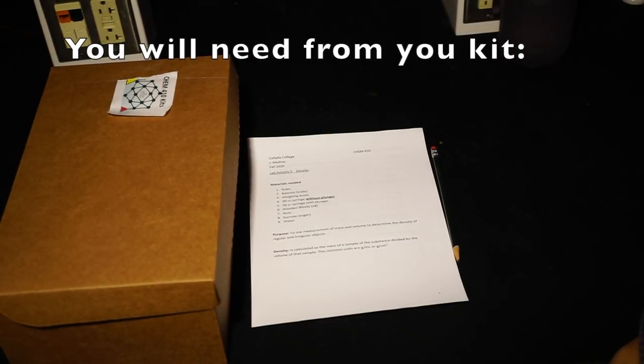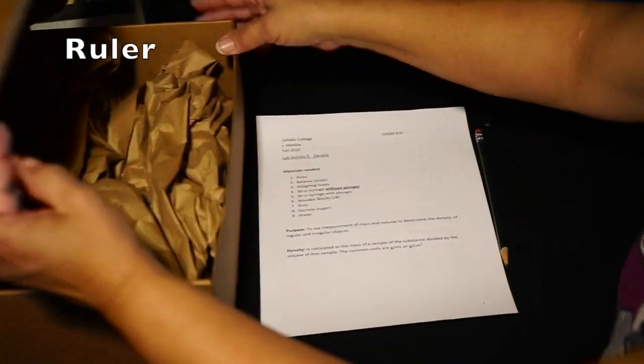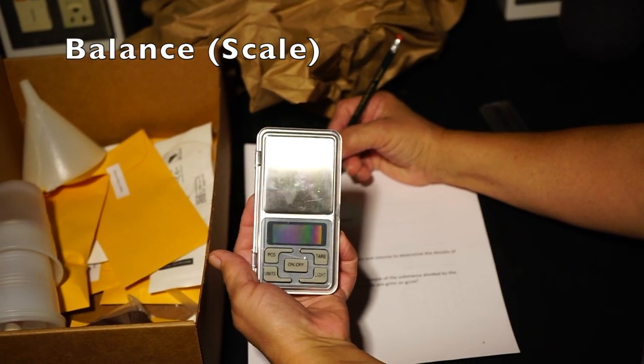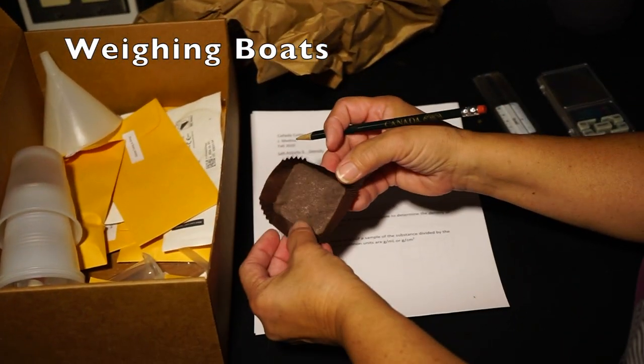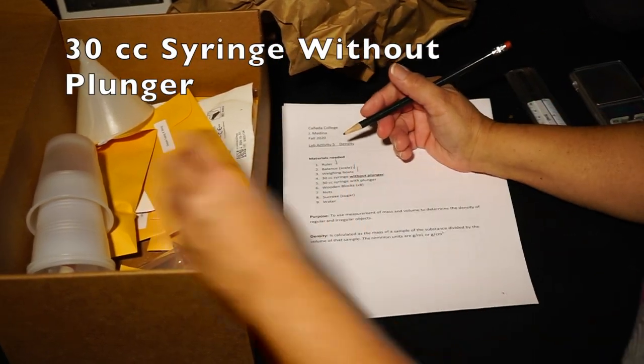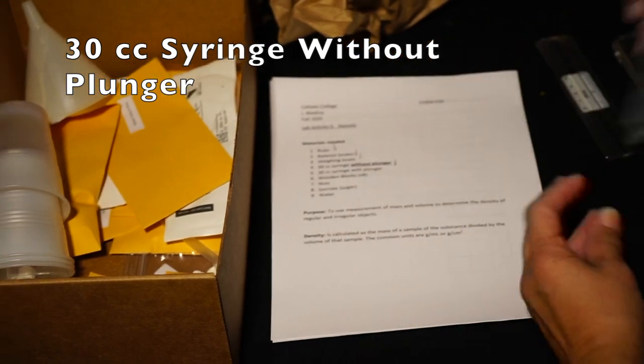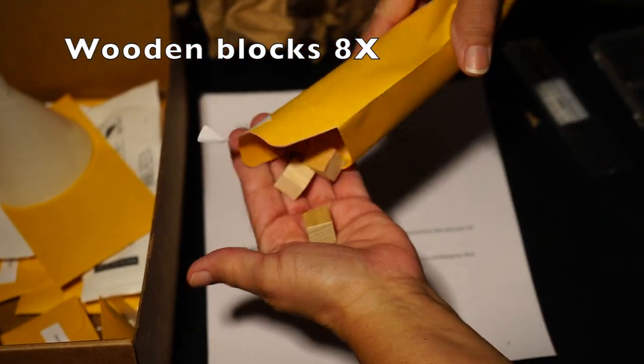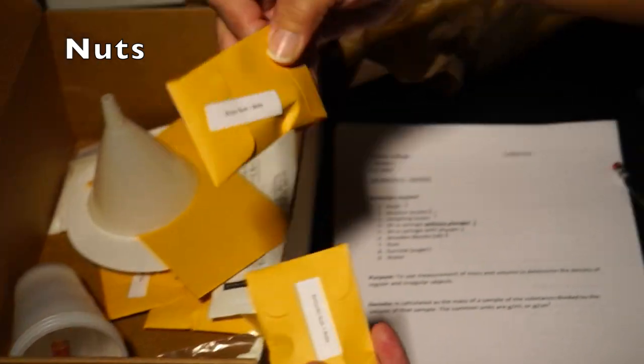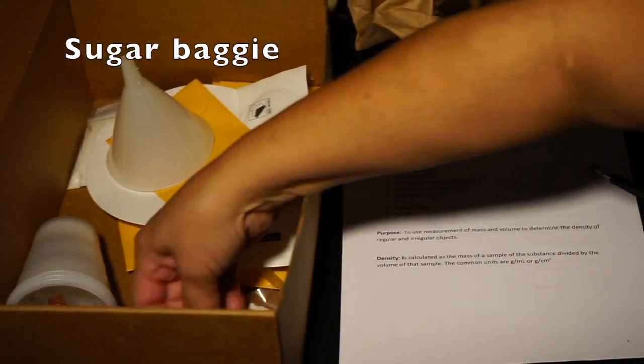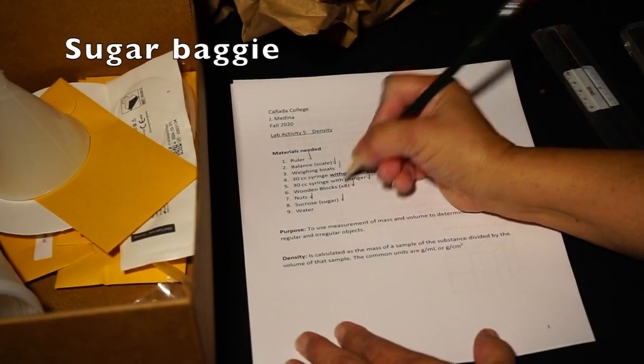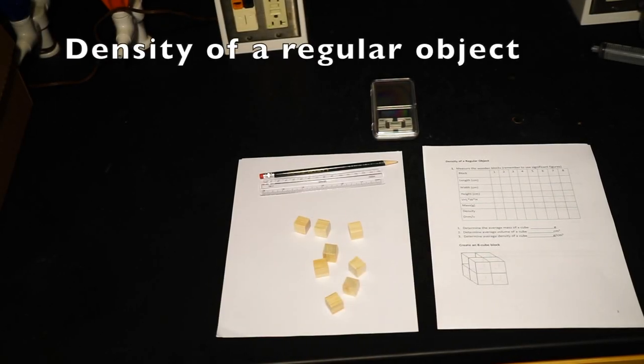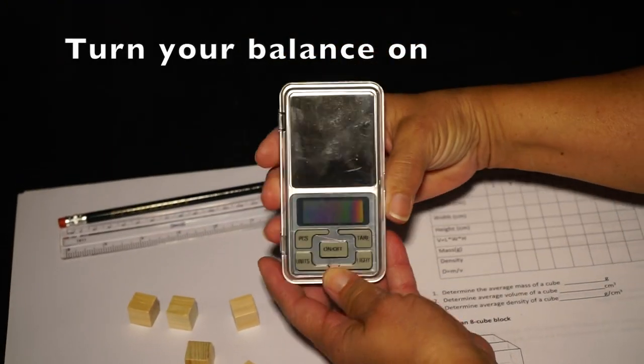You will need a ruler, balance or scale, weighing boats, 30 cc syringe without plunger, 30 cc syringe with plunger, wooden blocks, eight nuts, sugar baggie, and water which you will provide.